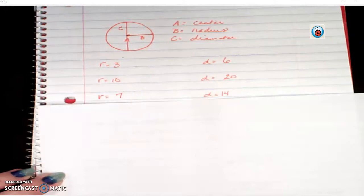If the diameter was 10, the radius would be 5.